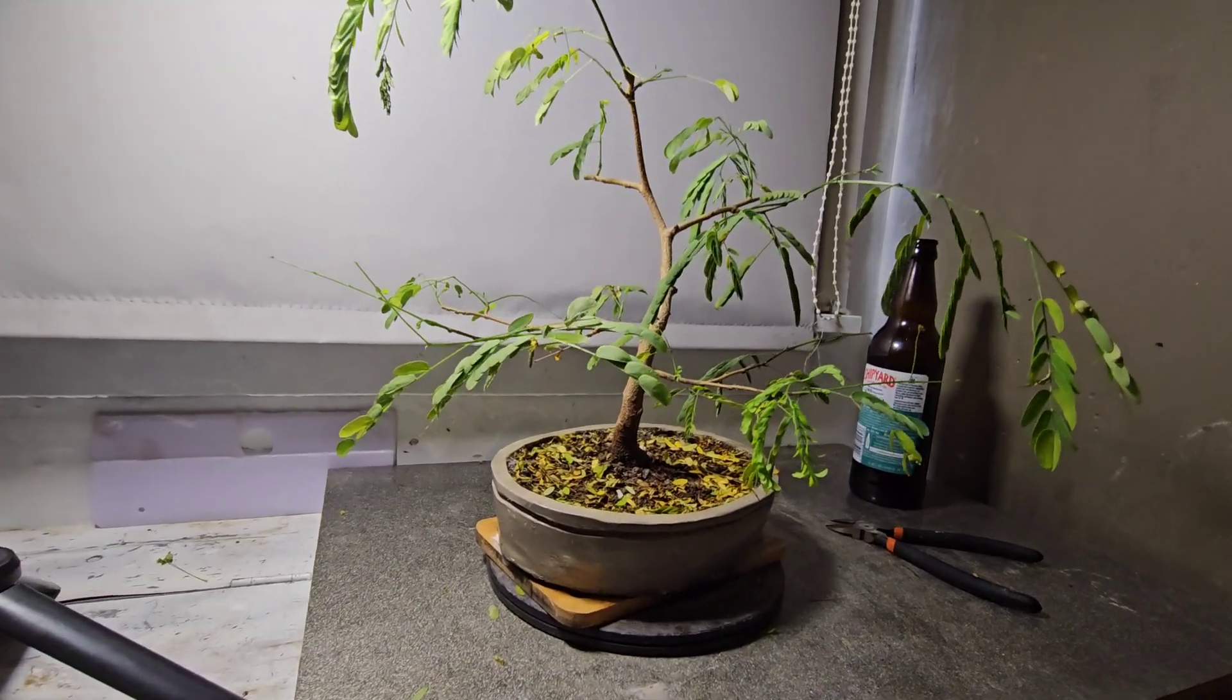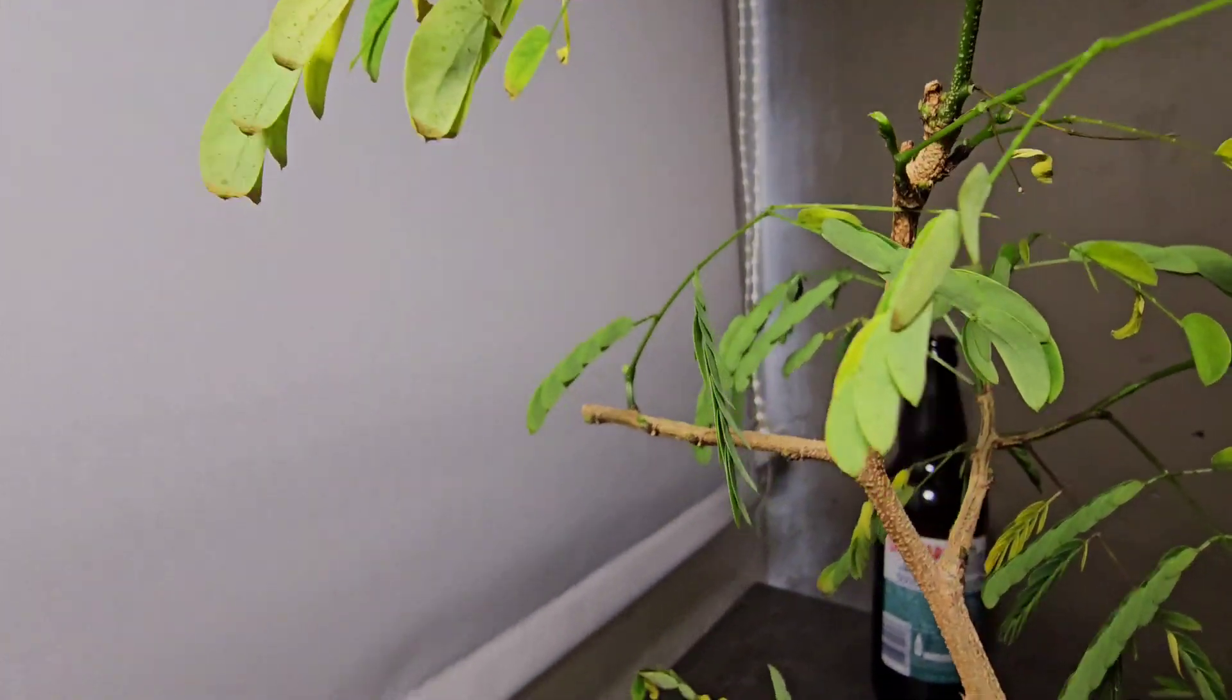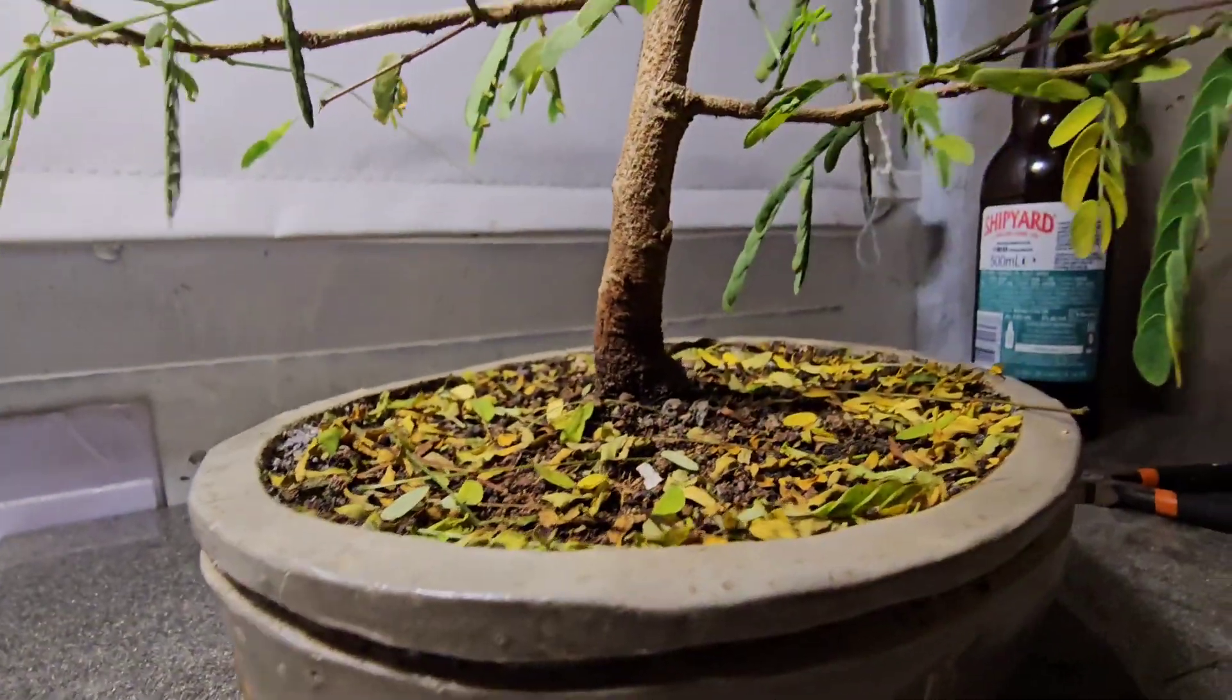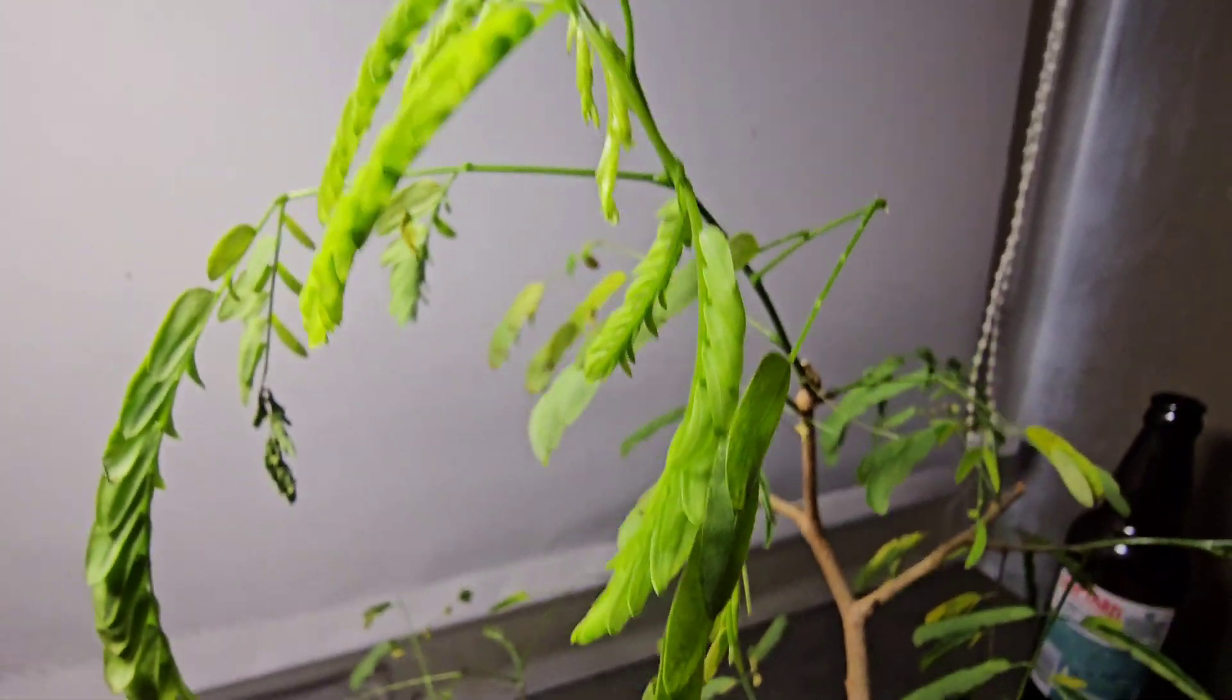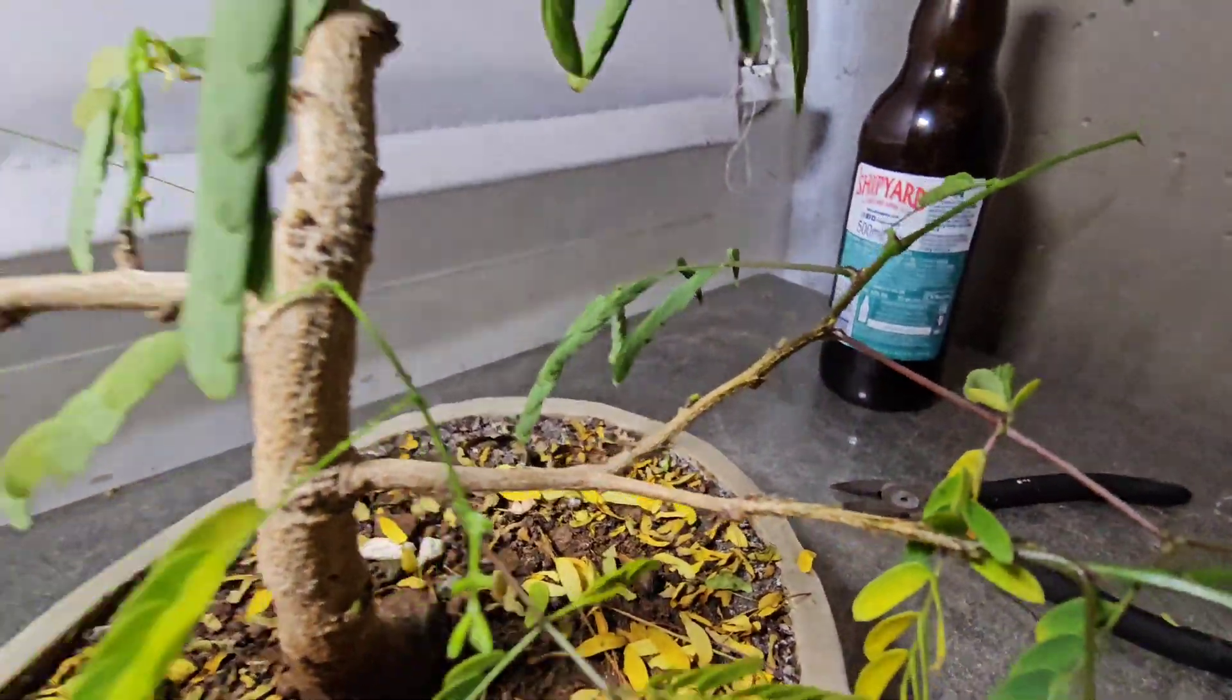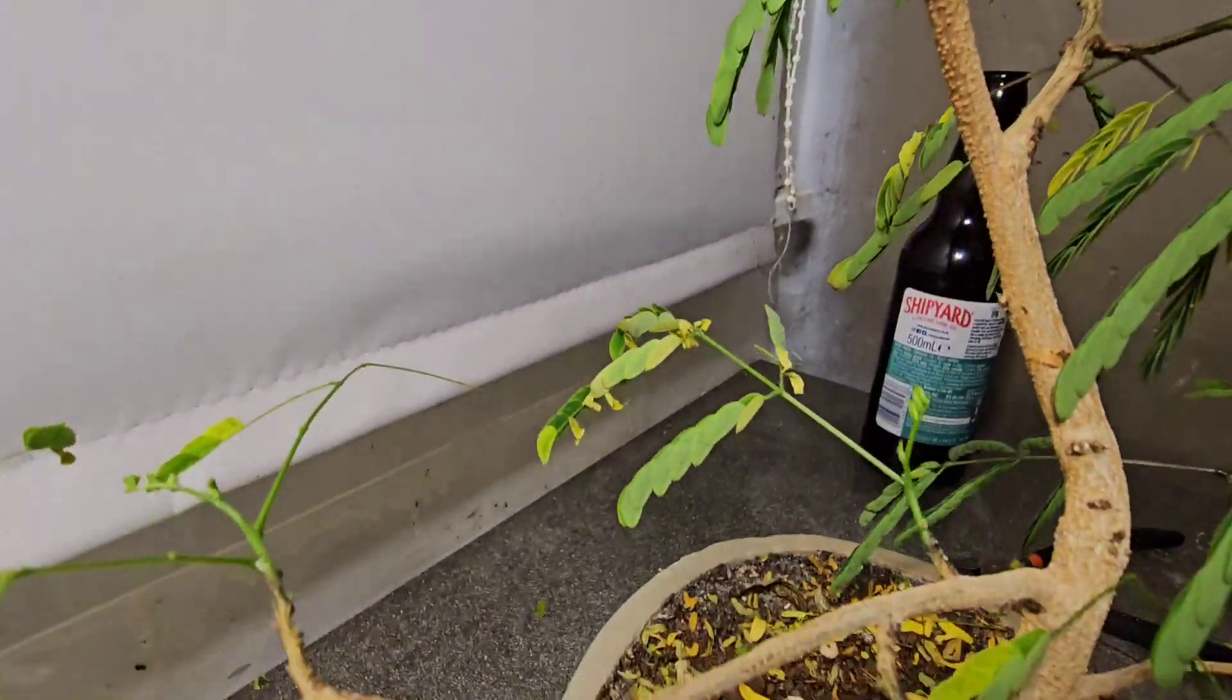Hello you bejeebers, so this is my Persian silk tree, Albizia something or other. It had a bit of a meltdown the other day. I left it outside for a night and it didn't really like that, so that's why all these leaves are starting to go yellow. I fed it as well and probably gave it a bit too much of a feed. It was probably a bit too strong for it.